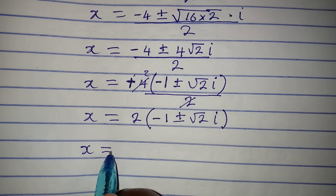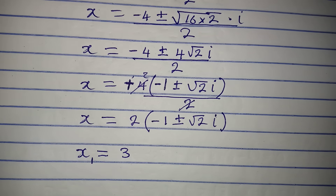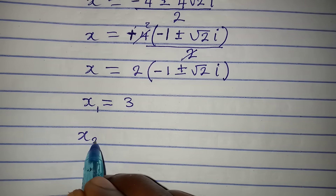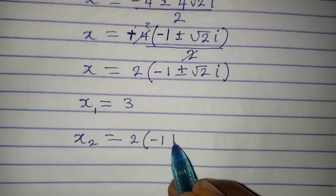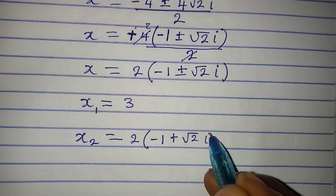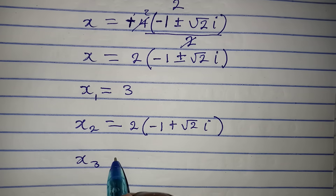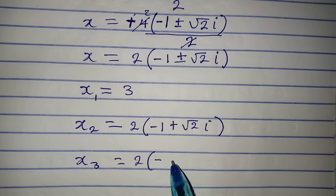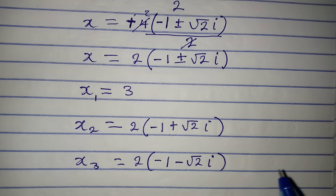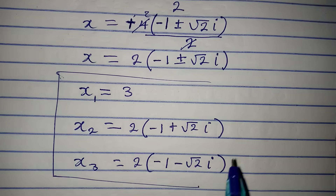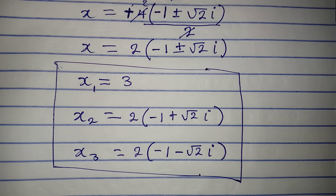These are the 3 solutions to the problem. x₁ equals 3. Our x₂ is 2 times bracket minus 1 plus square root of 2i. And our x₃ is 2 times bracket minus 1 minus square root of 2i. So these are the three solutions to the given equation. Thank you for watching.